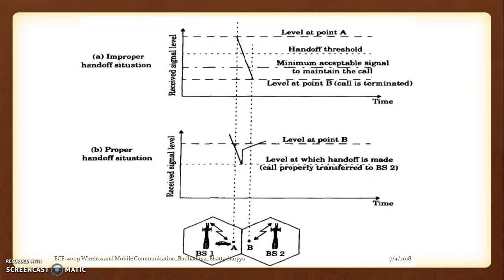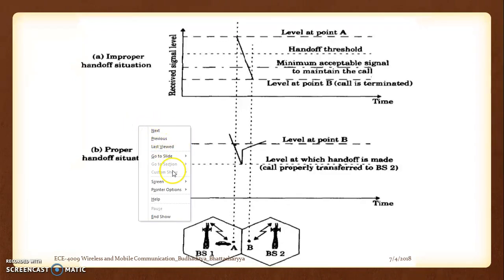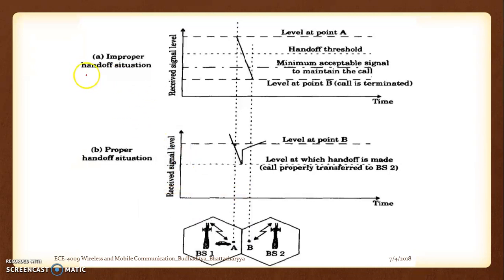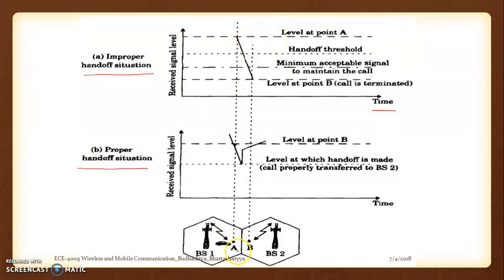This is a common diagram used to explain handoff strategies. The top half shows improper handoff and the bottom shows proper handoff. In the improper handoff diagram, the graph shows received signal strength with respect to time. The user is at position A near base station 1 and is moving toward B.